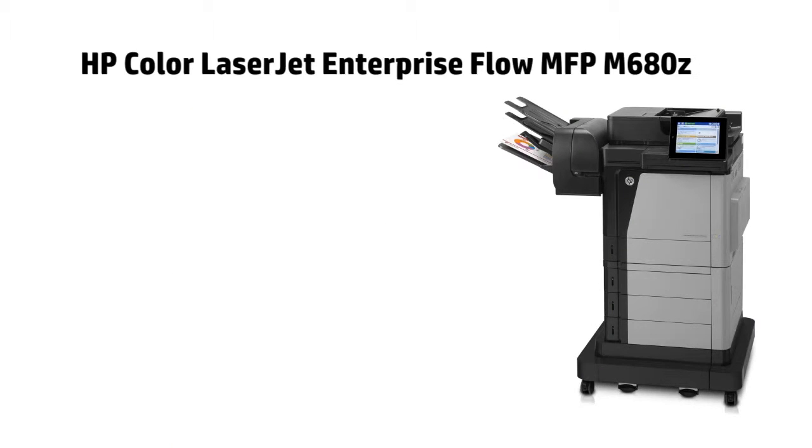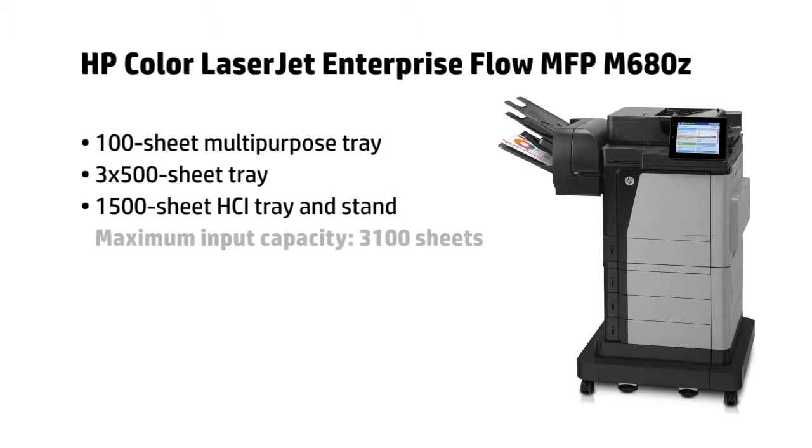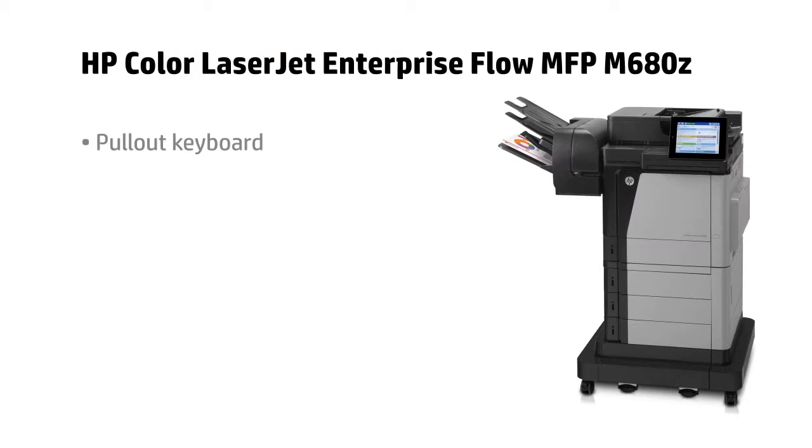At the top of the line, the Z or Flow model includes the 100-sheet multi-purpose tray, three 500-sheet trays, and a 1500-sheet high-capacity input tray and stand for a maximum capacity of 3,100 sheets.